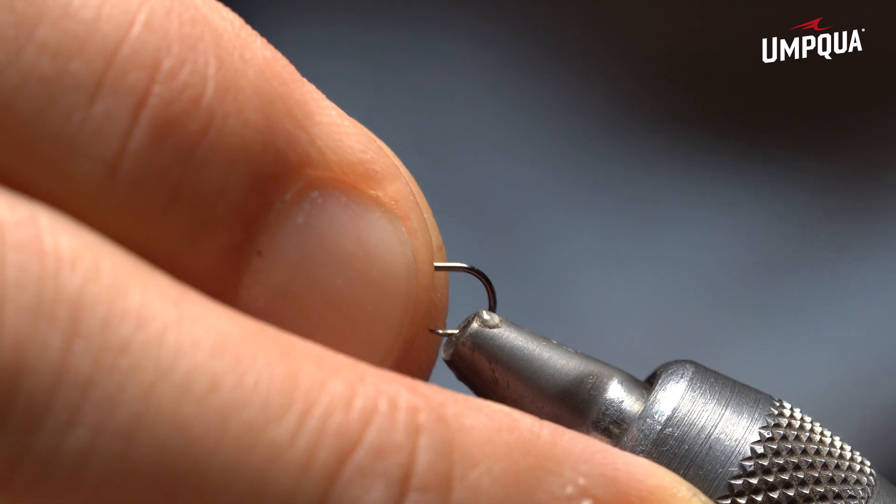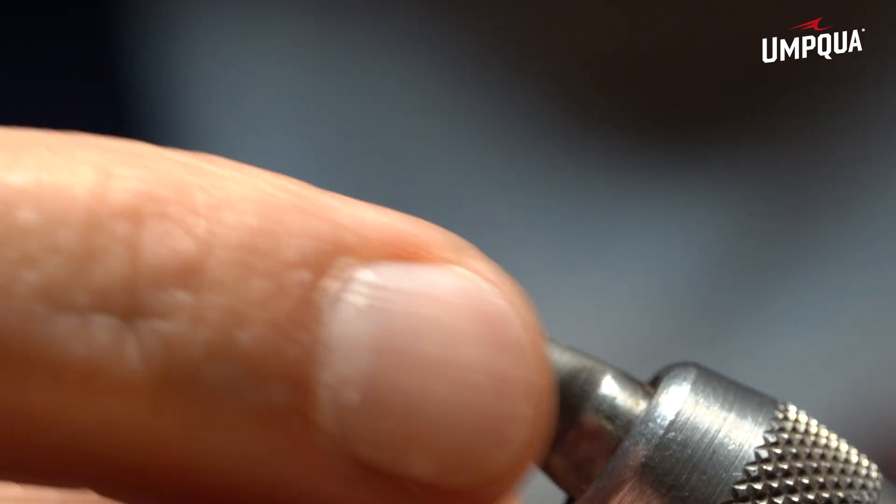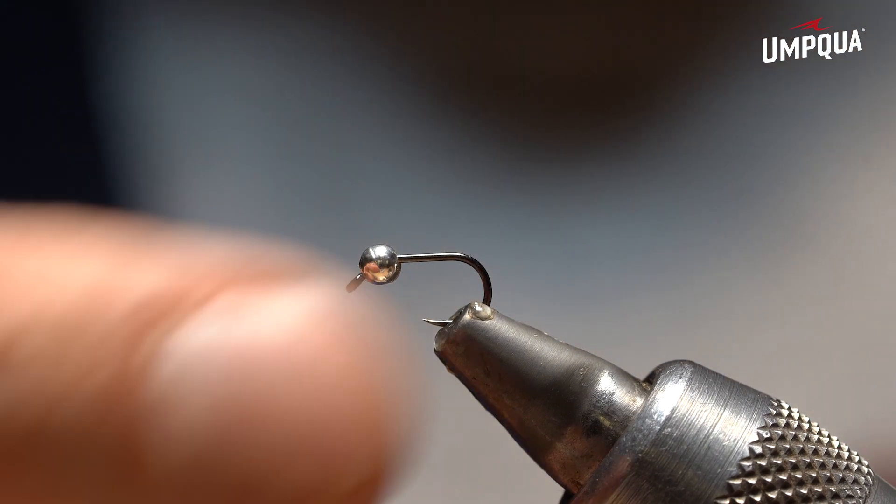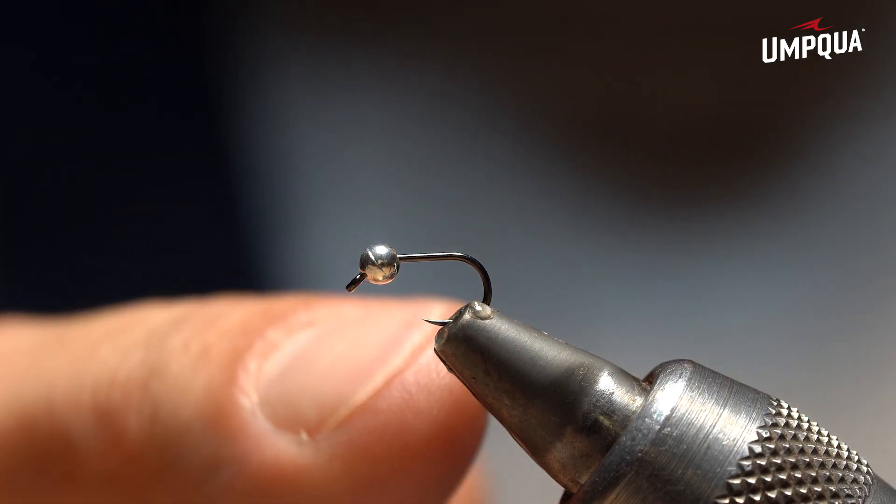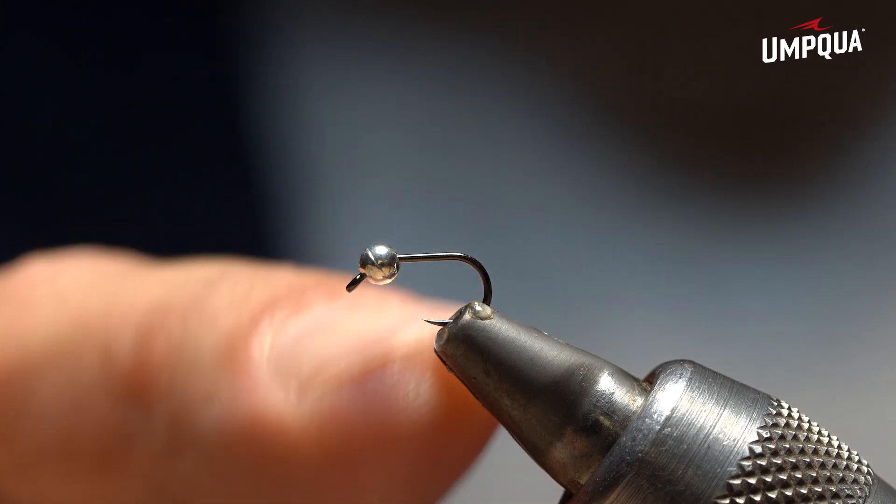Another big advantage of this hook is the wide gap that you have. As you can see, even with a 2.5 mil bead you have a wide gap, a lot of room in here.